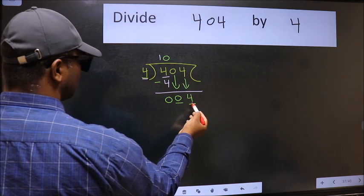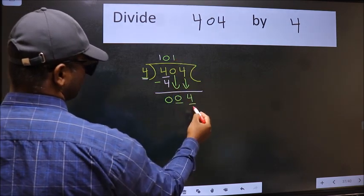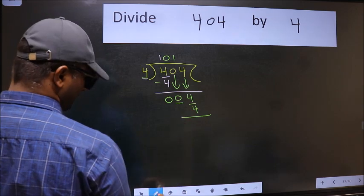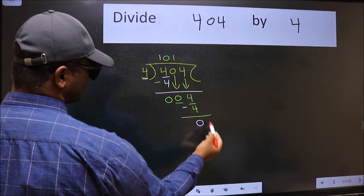Now 4. When do we get 4 in 4 table? 4 once, 4. Now we should subtract. We get 0.